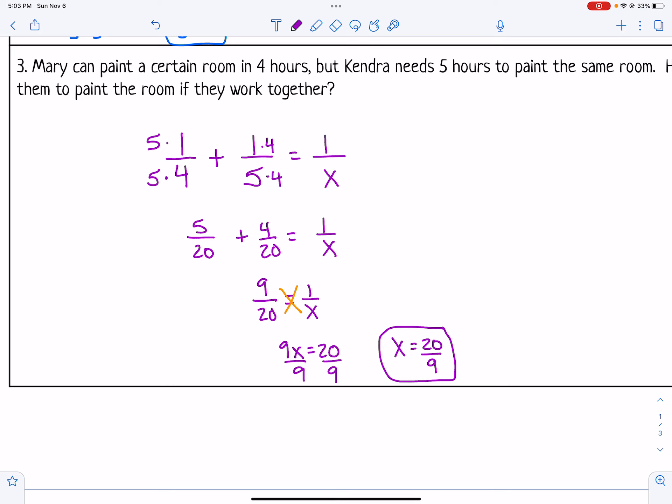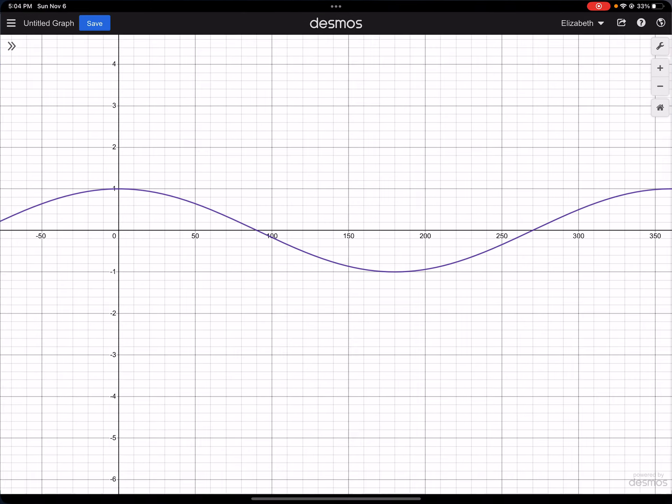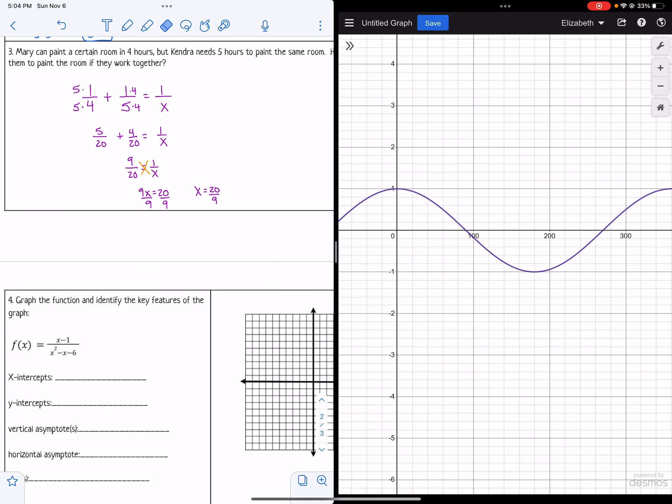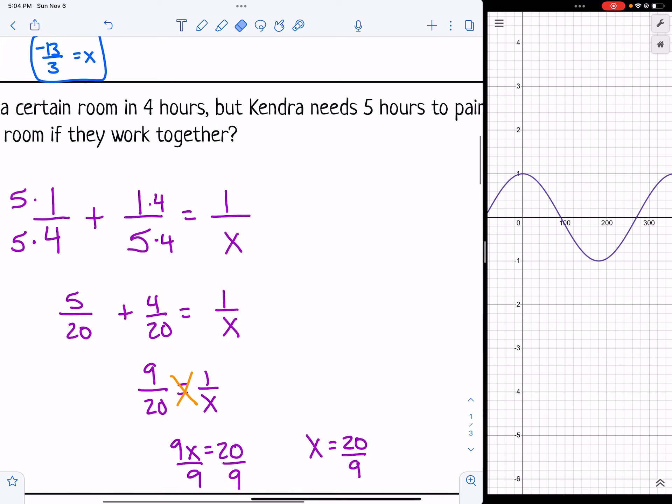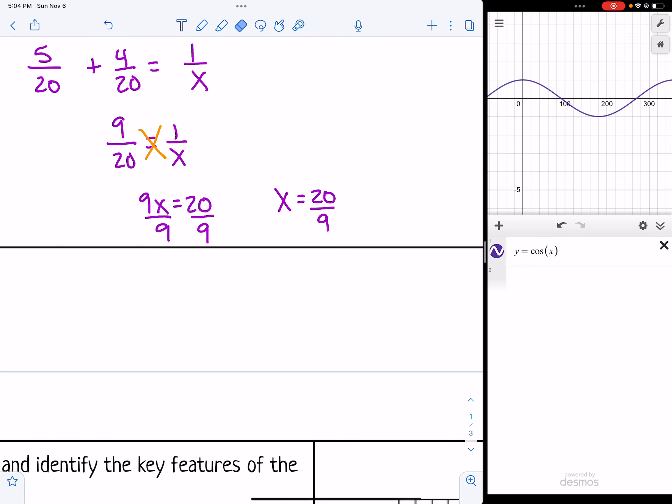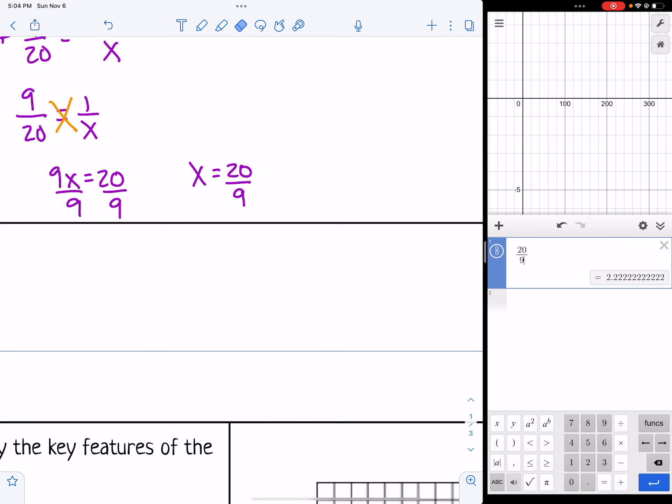Now that's not a normal number we talk about with time. So let's make that look a little better. So let me grab my calculator. And I'm going to type in 20 over 9 and get a decimal. And then interpret that as time. So let's say 20 divided by 9 is 2.2 repeating.